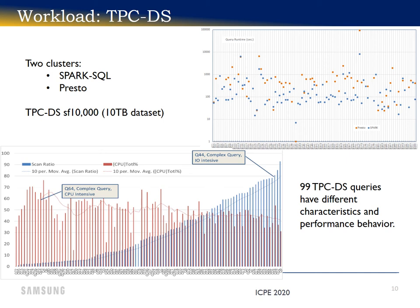Some are CPU intensive, some are I/O intensive, some are both. The shortest query is query 41, completing in about 1 second under Presto and 7 seconds under Spark SQL. The longest running query is query 72, which takes more than 25 hours to complete under Presto, and about 2 and a half hours under Spark SQL. Most queries complete between 2 and 20 minutes.